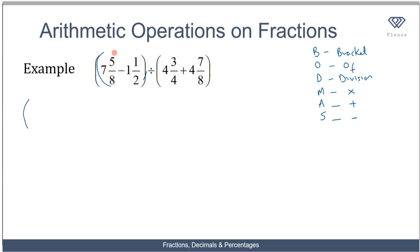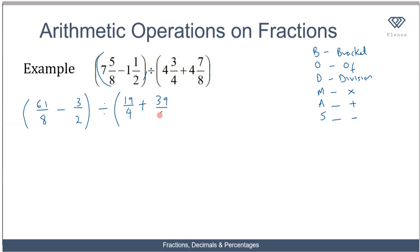To convert to improper fractions: 8 times 7 plus 5 gives us 61 over 8, minus 2 times 1 plus 1 over 2, then divided by 4 times 4 plus 3 which is 19 over 4, plus 8 times 4 plus 7 which gives 39 over 8. Now I find the LCM to solve what is in the brackets. The LCM is 8: 61 minus 4 times 3 equals 12.